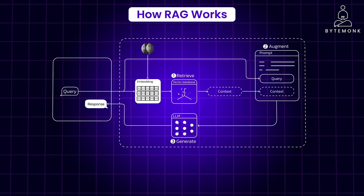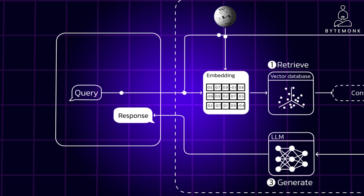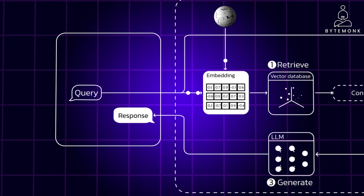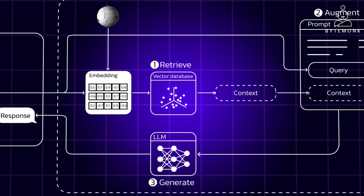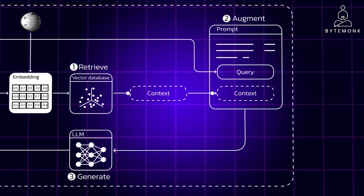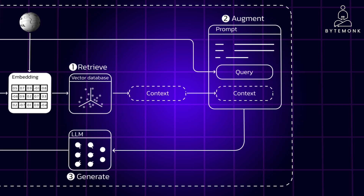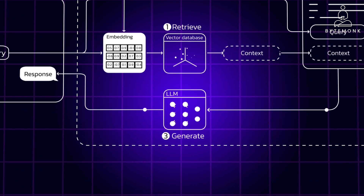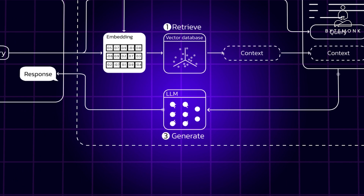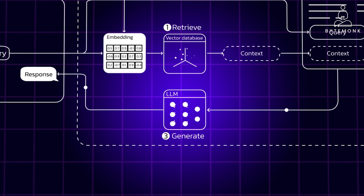Here is how RAG works. The user asks a question and the system analyzes it to understand the intent. The relevant documents or snippets are then retrieved from an external knowledge source, say Wikipedia. The retrieved information is added to the LLM's context window along with the user's question. Finally, the retrieved augmented prompt is fed to the LLM, and the LLM generates an answer leveraging the augmented context.